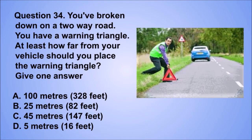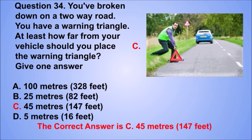Question 34. You've broken down on a two-way road. You have a warning triangle. At least how far from your vehicle should you place the warning triangle? Give one answer. A: 100 m (328 ft). B: 25 m (82 ft). C: 45 m (147 ft). D: 5 m (16 ft). The correct answer is C: 45 m (147 ft).